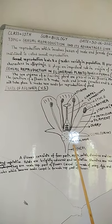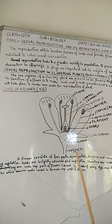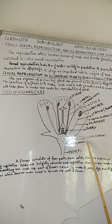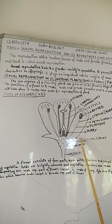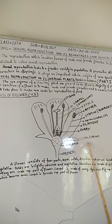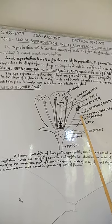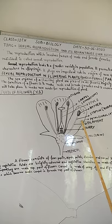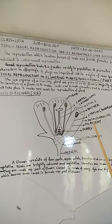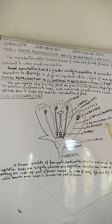In the diagram, this is the pedicel. The upper part of this pedicel is the thalamus. Then these green parts are sepals. The collective name of sepals is calyx. Then come the brightly colored leaves of the flower, they are called petals. Collectively, petals are known as corolla.